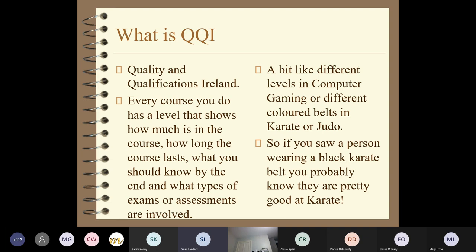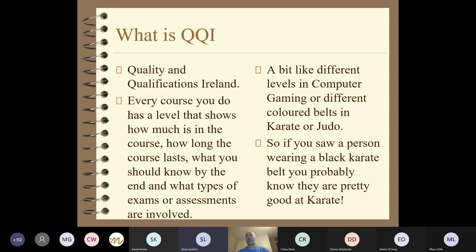Think of it like different levels in a computer game - in order to get to the next level you have to have completed the level before, though sometimes you can skip one or two. Or like the different colour belts in karate or judo. If you saw someone standing opposite you wearing a karate black belt, you'd have a fair idea that this is a pretty serious person to take on in a fight - you have an idea of their ability. The QQI levels tell us something similar in relation to education.